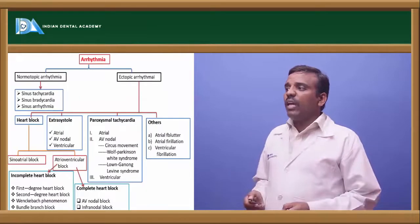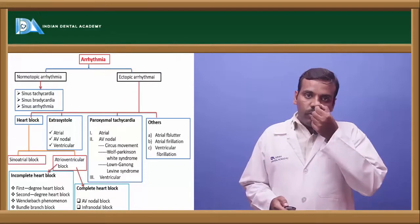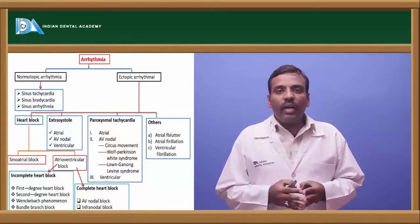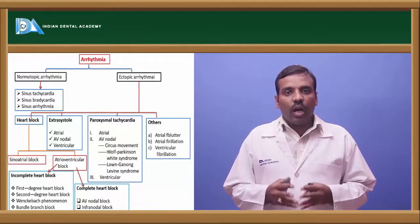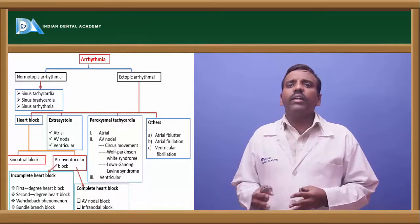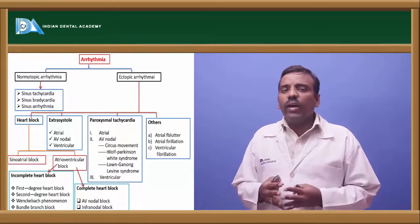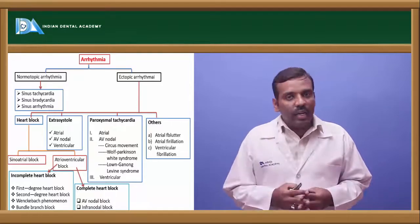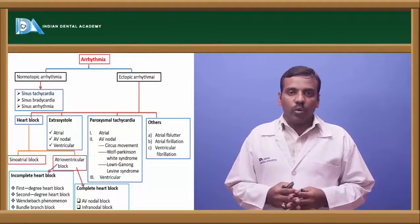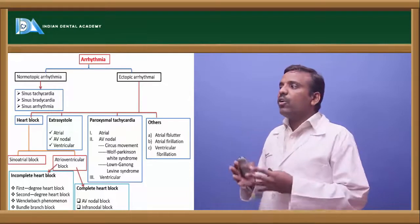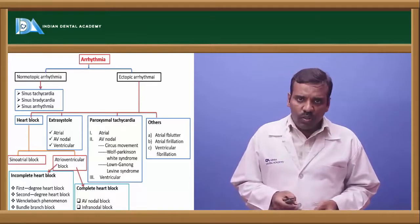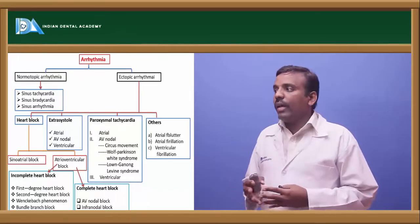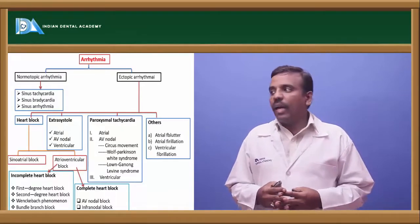Types of arrhythmia are divided into two types: normotopic arrhythmia and ectopic arrhythmia. Normotopic arrhythmia includes sinus bradycardia, sinus tachycardia, and sinus arrhythmia. Ectopic arrhythmia includes four types: heart block, extrasystole, paroxysmal tachycardia, and other causes.